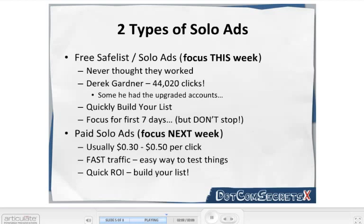Next week we'll be focusing on paid solo ads. This is still cheap traffic — you usually pay between 30 and 50 cents per click, which is very low for targeted traffic. What's nice is it's fast traffic, an easy way to test things, with quick ROI: you put in $30 and make $50, put in $100 and make $150. You usually make your money back very quickly. Just be aware that the free safe lists will have lower quality clicks compared to the paid solo ads. This week you may send a lot of clicks but may not make as much money as you hope — next week's traffic will convert higher.